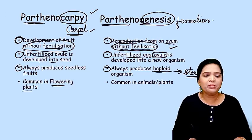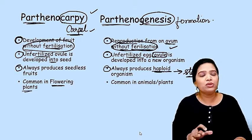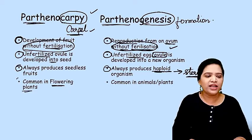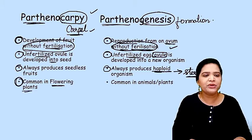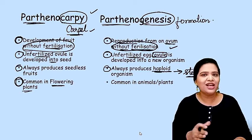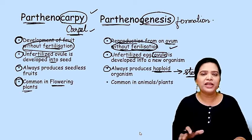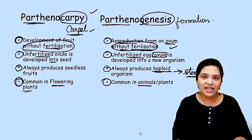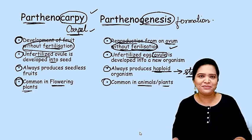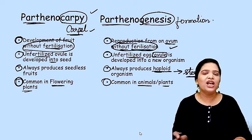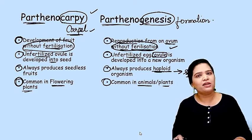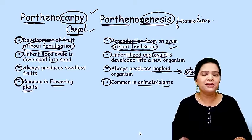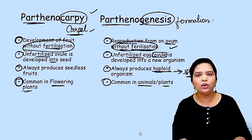Parthenocarpy is applicable only to plants since it involves formation of fruits. Whereas parthenogenesis mostly occurs in animals and sometimes also in plants. Both are completely different but occur without fertilization.